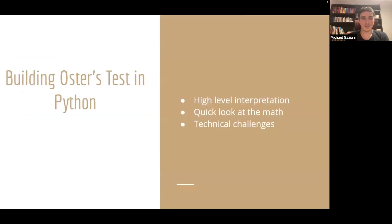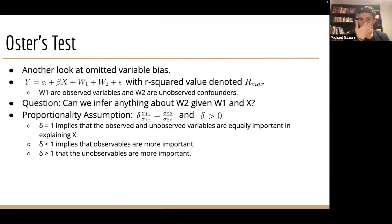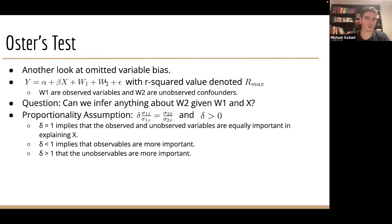The next sensitivity analysis test was Oster's test. This may look a little different in notation — I wanted to keep it consistent with Emily Oster's paper. This is another look at omitted variable bias. We have our y variable, our x variable of interest, and we denote beta-one just as beta. W1 encodes our selected controls that are observable, and W2 represents some unknown variable we don't have data for. We'll have an r-squared value for this regression model called R-max. The question is: can we really infer anything about beta and how this unknown variable impacts the model, given just what we know about W1 and X?